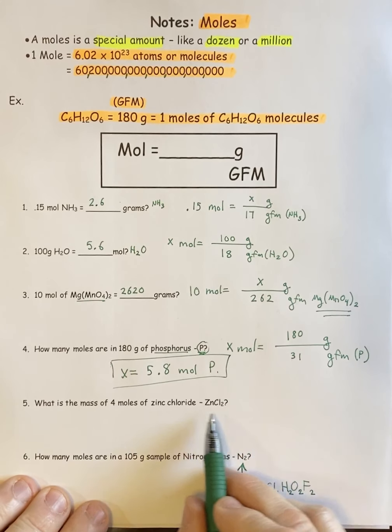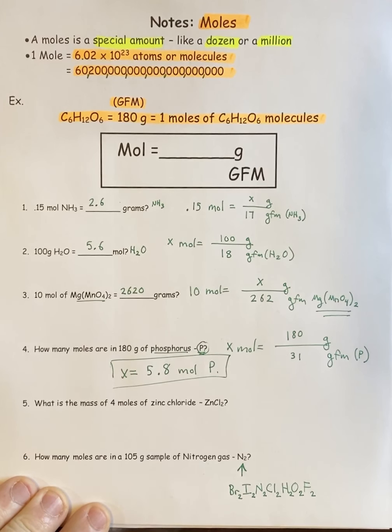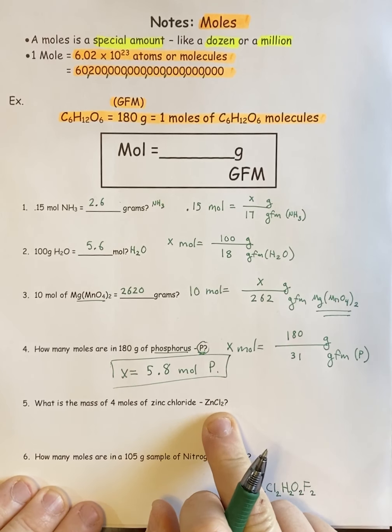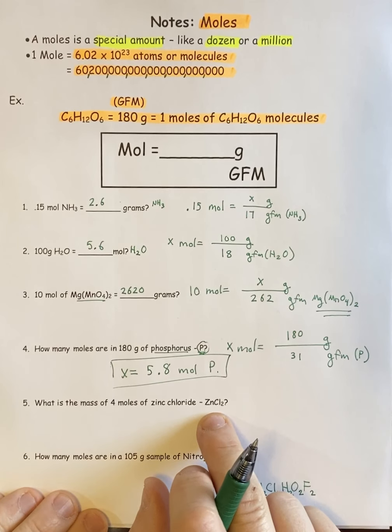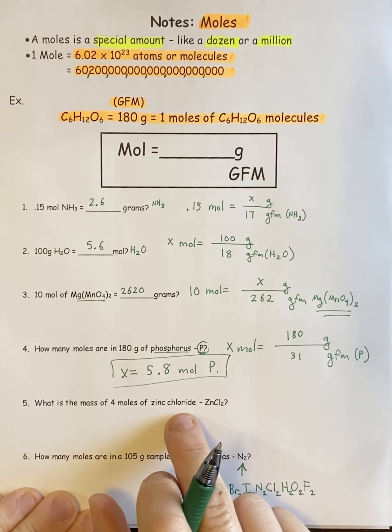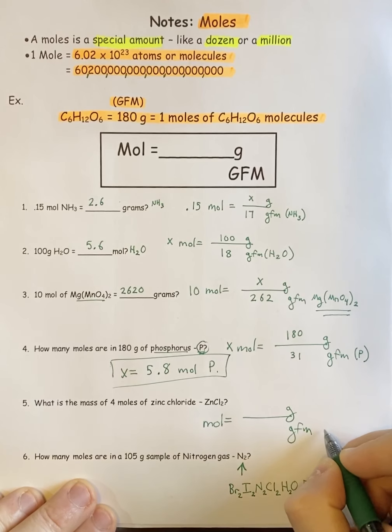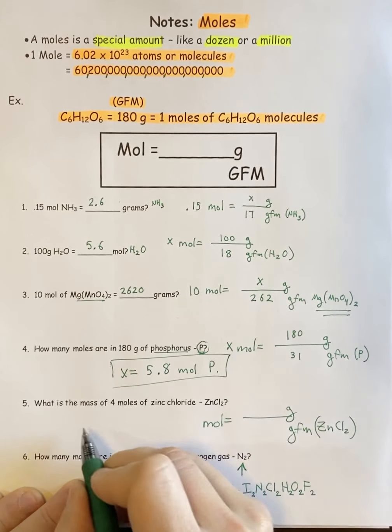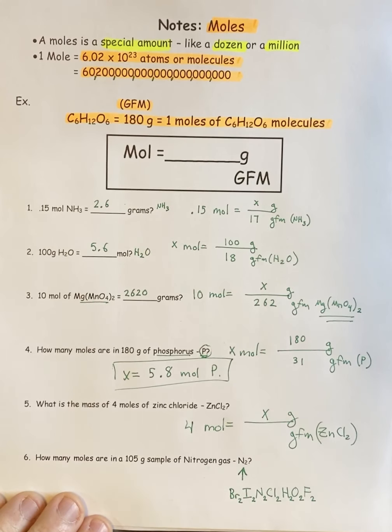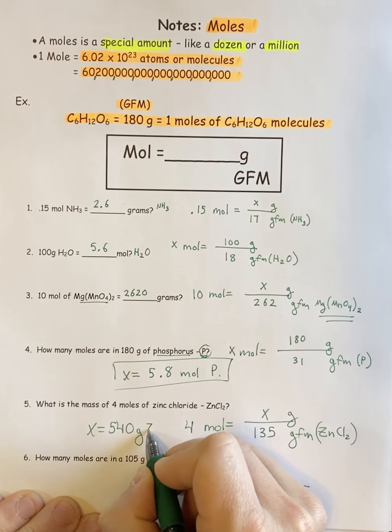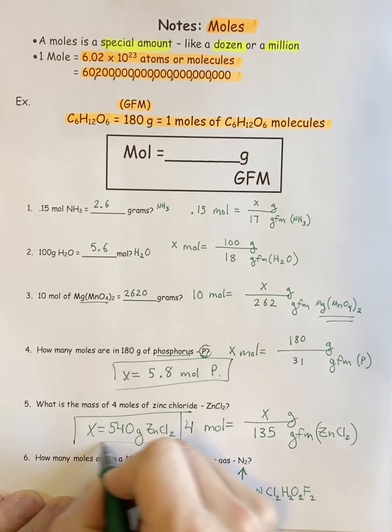Next problem. They want to know what's the mass of 4 moles of zinc chloride. The issue with these types of problems is we have not learned naming yet. So for you guys, I would always give you the formula, but depending on what point in the year we're in, you could get the formula or the name, and you'd have to figure out that zinc chloride actually has two chlorines and not just one. The name doesn't really tell you how many of each. My GFM for zinc chloride, ZnCl2, should be 135. There's my answer.